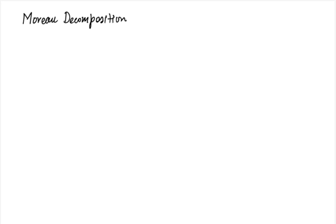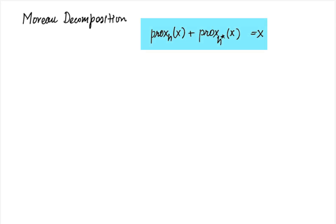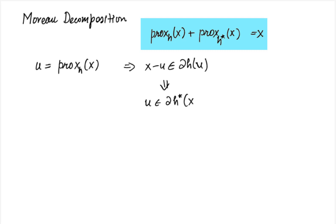The Moreau decomposition is an interesting result that does not arise in the context of projection. It states that for any closed convex function h: prox_h(x) + prox_{h*}(x) = x. So if you know the proximal with respect to h, calculating the proximal with respect to h* is straightforward. This follows directly from the conjugate subgradient theorem: if u = prox_h(x), then x - u is a subgradient of h* at x - u, meaning x - u = prox_{h*}(x).